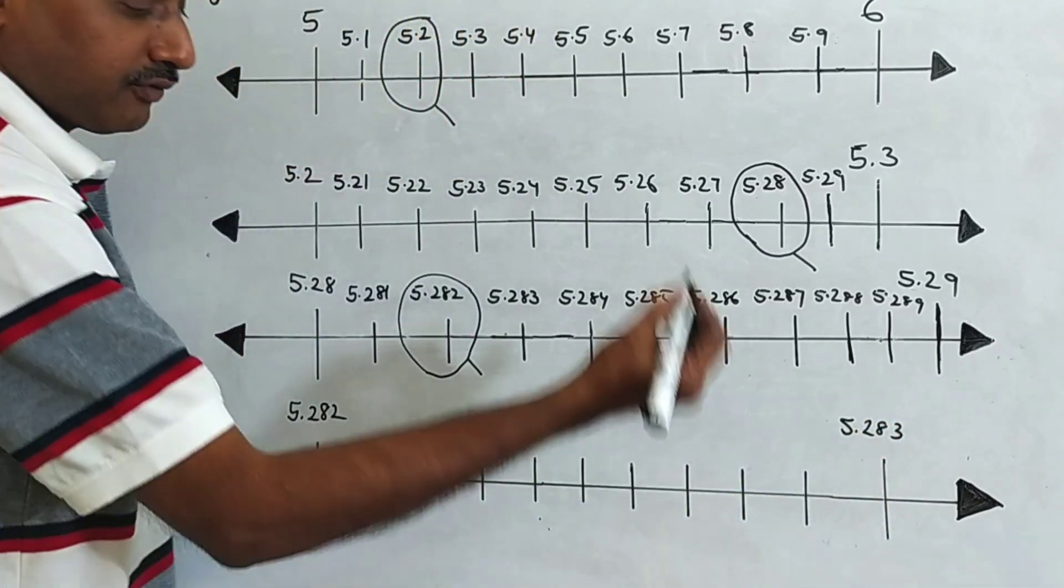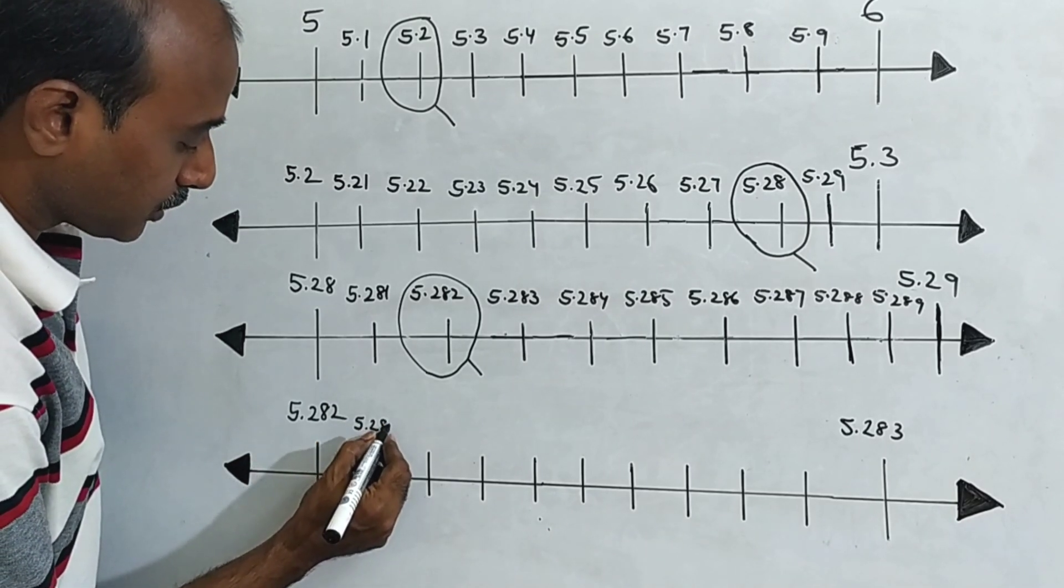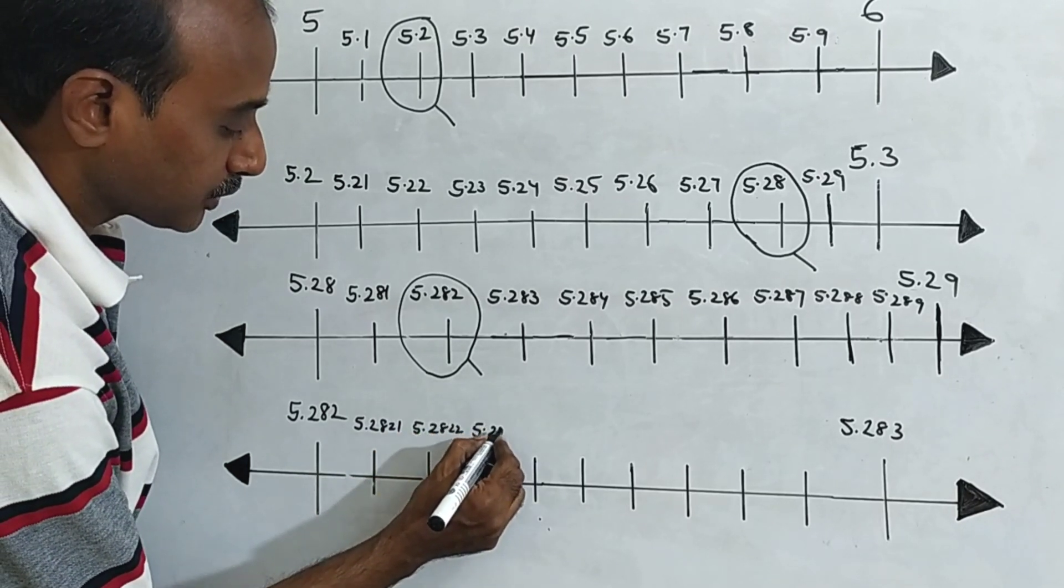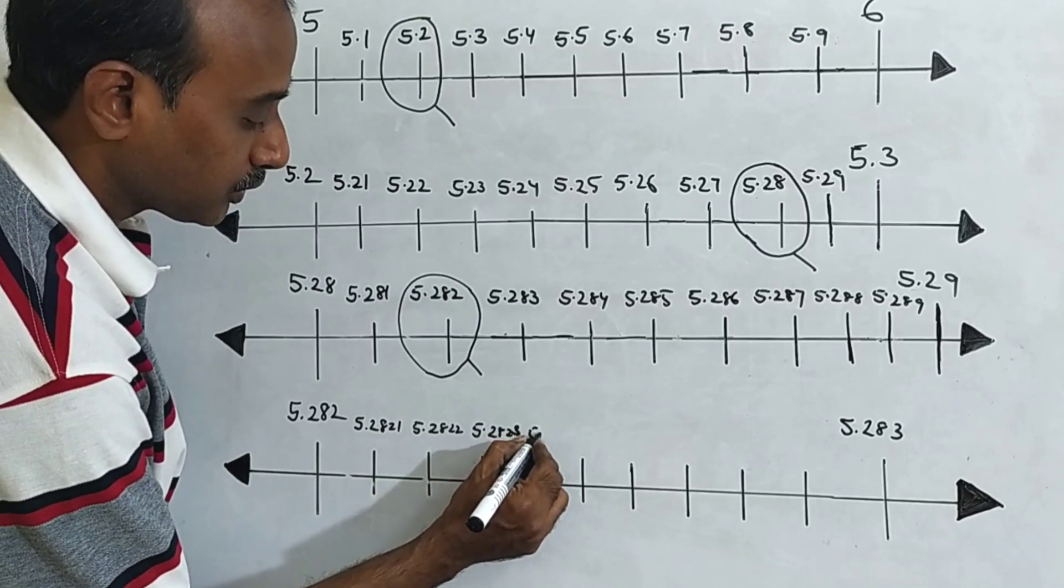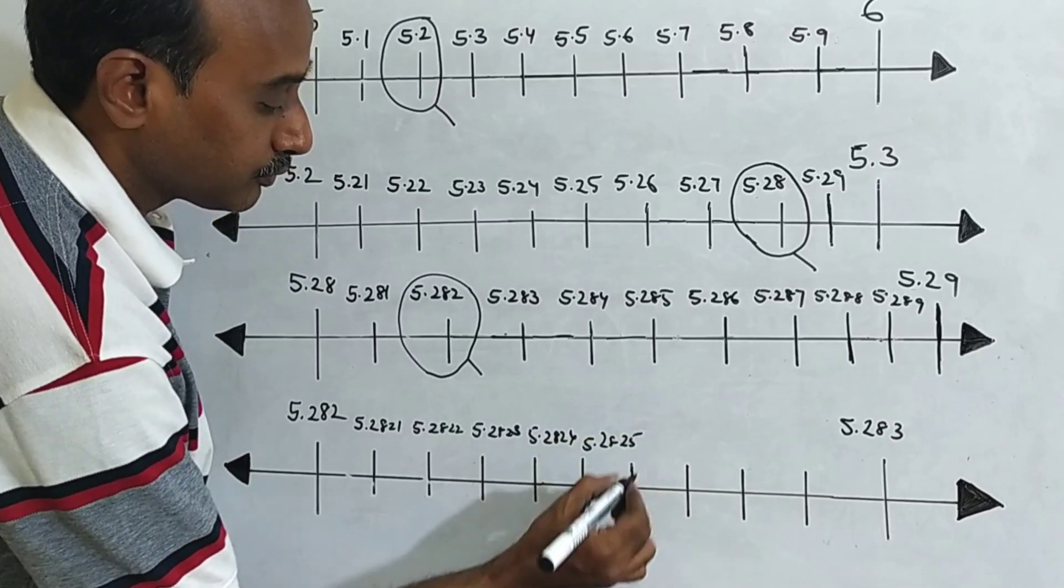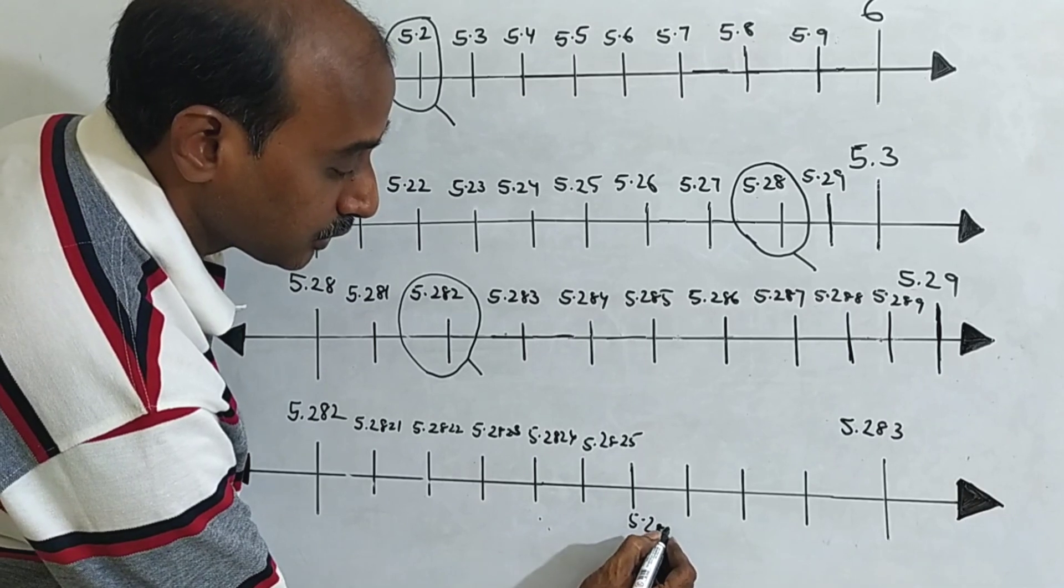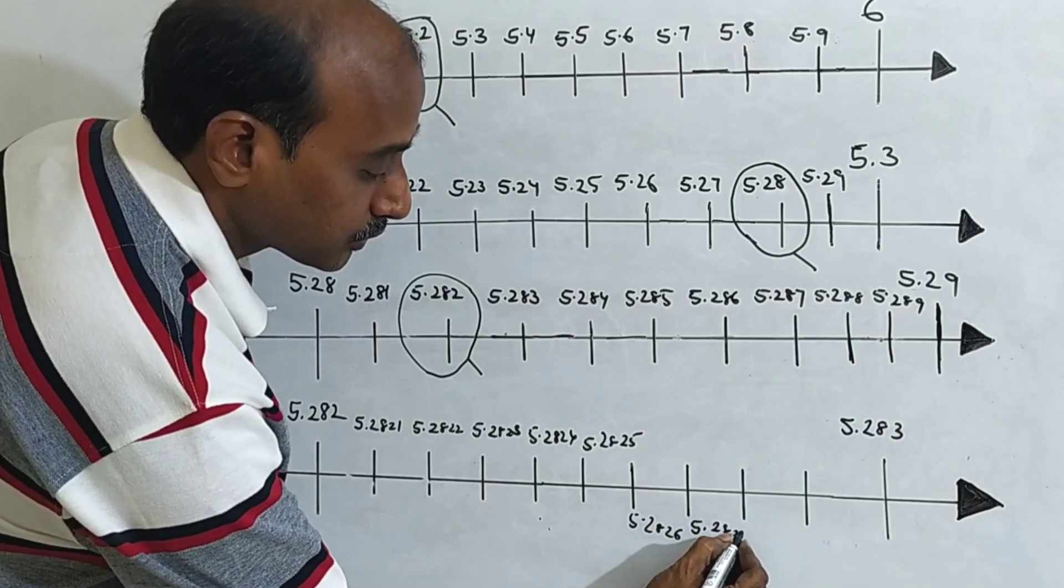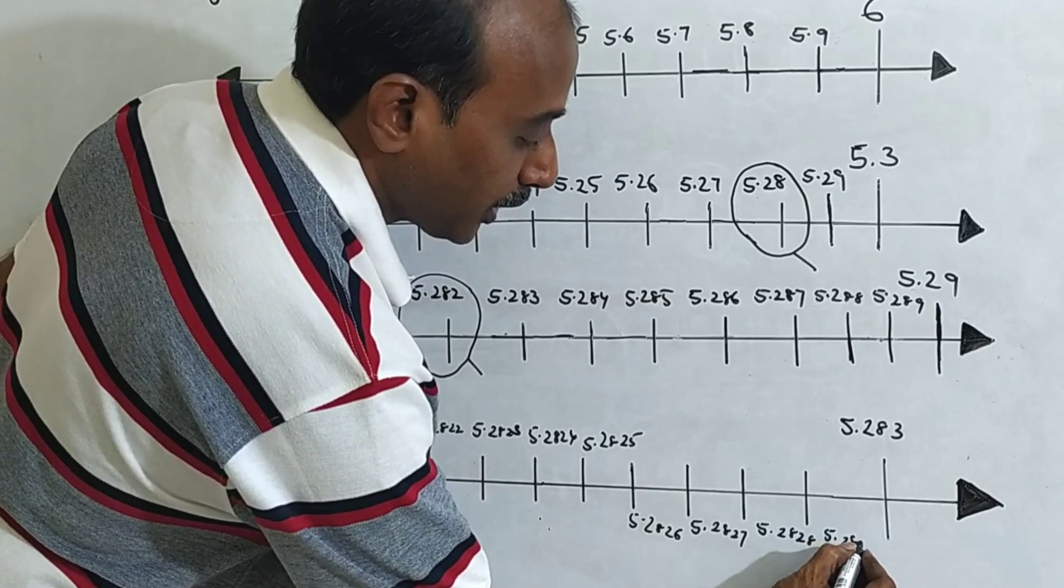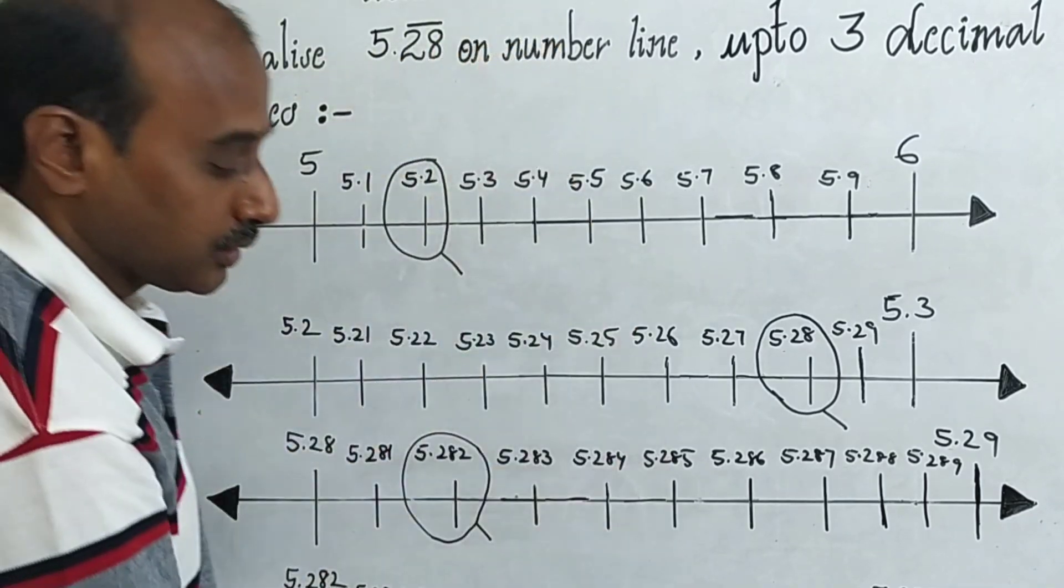Now you can divide it into 10 equal parts. Write each one: 5.2821, 5.2822, 5.2823, 5.2824, 5.2825, 5.2826, 5.2827, 5.2828, 5.2829. This is 5.283. Now you can see 5.2828.